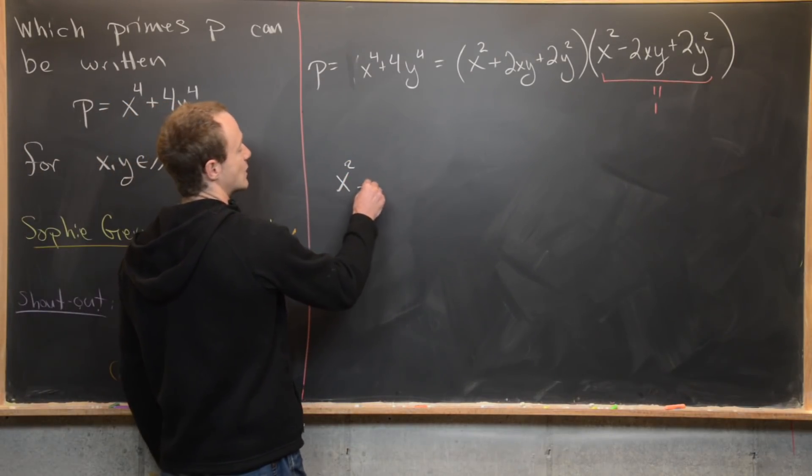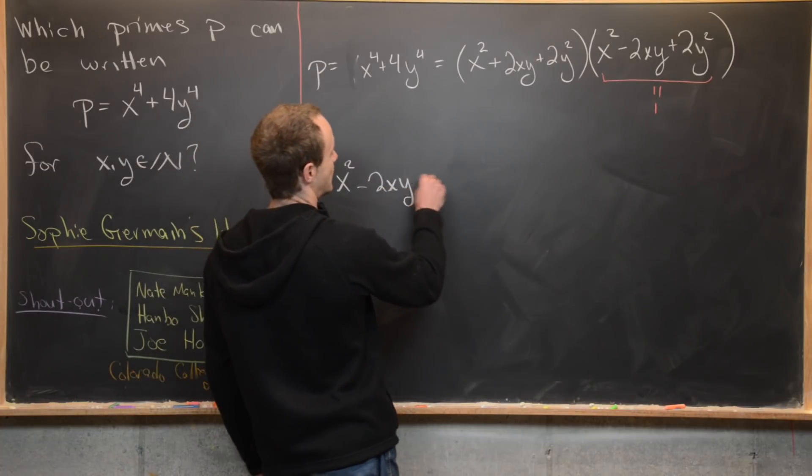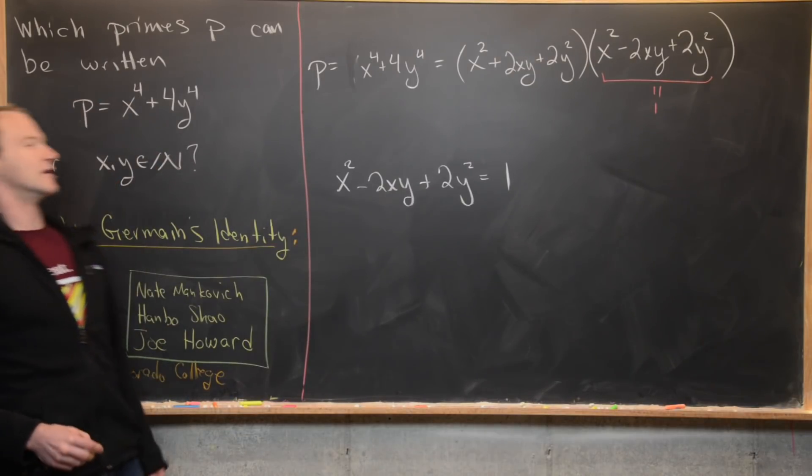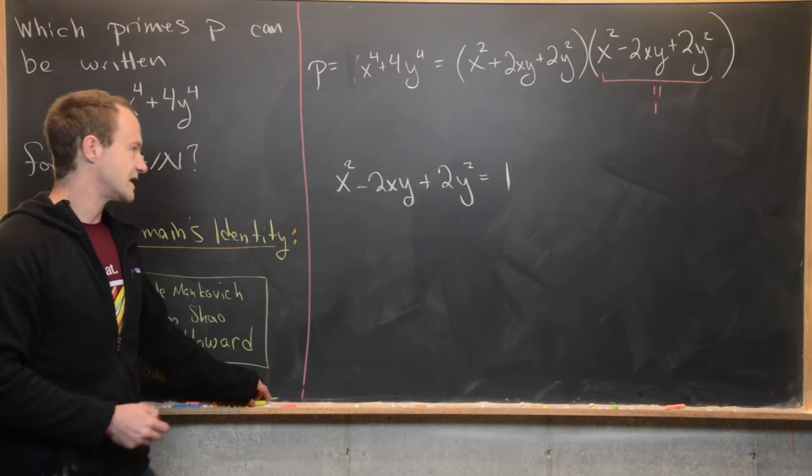So let's see what we've got now: x squared minus two xy plus two y squared equals one. Again, x and y are natural numbers. So let's see what we can do here.